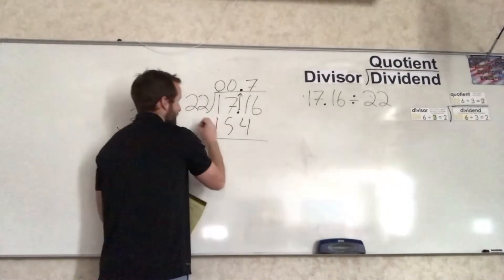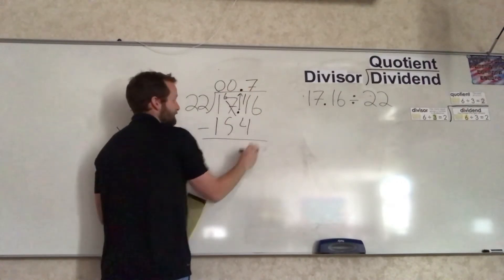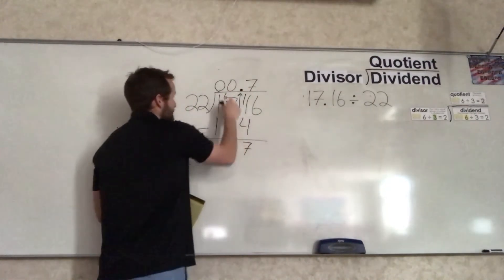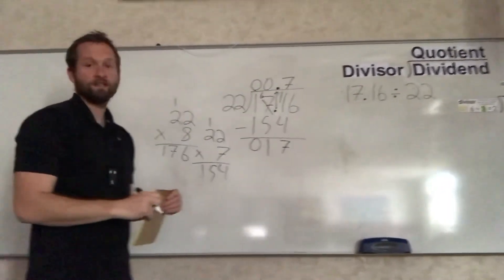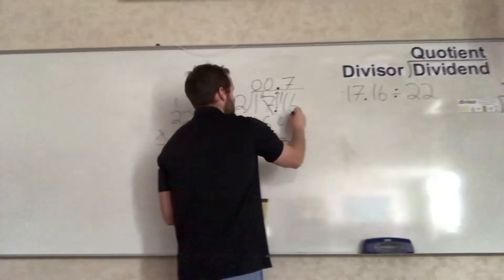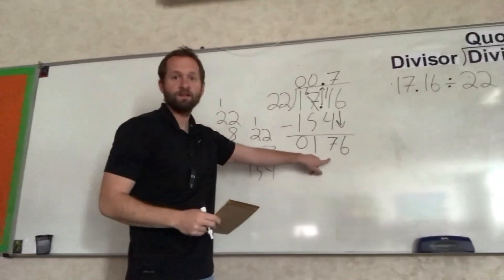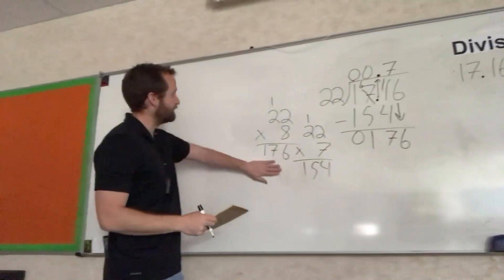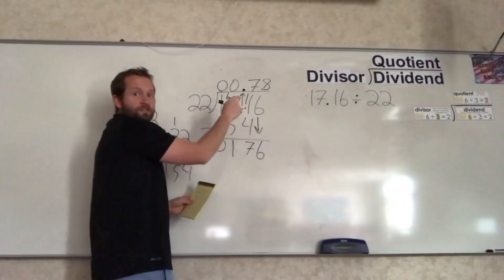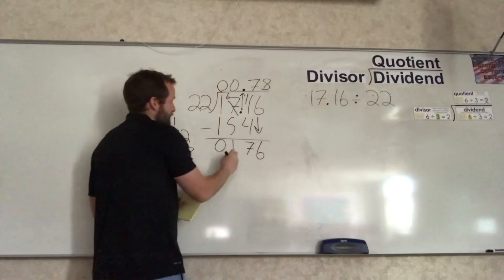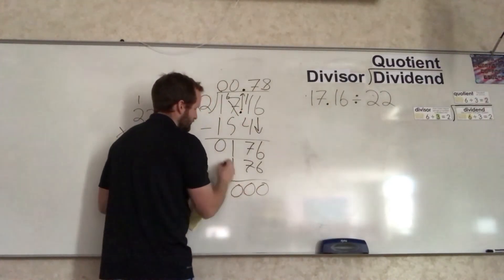Let's take that away. We need to borrow. So it turns into a 6, it turns into 11. 11 minus 4 is 7, 6 minus 5 is 1, and 1 minus 1 is 0. So we have 17 left. Let's bring down our next place value. Bring down our 6 and ask that question: Does 22 fit into 176? And it does. We saw it right here. It fits in 8 times. 22 times 8 is 176. We are left with 0.